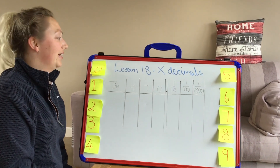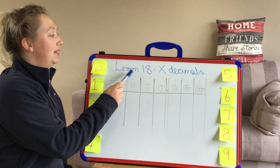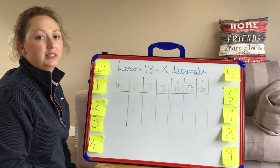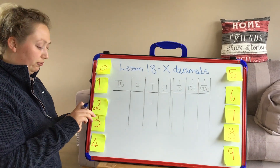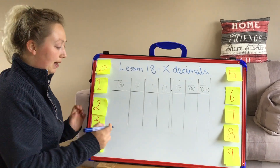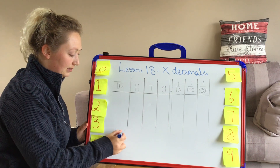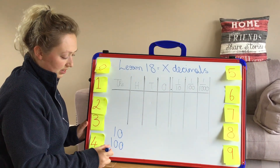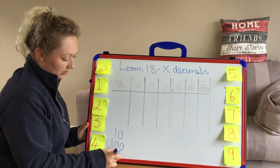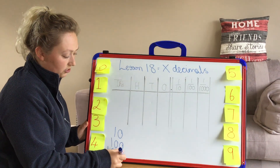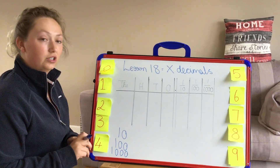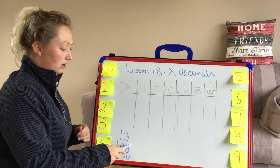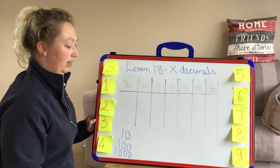Hi boys and girls, hope you're all okay. So today we're looking at multiplying decimals and we're only going to be focusing on the powers of 10. Just to remind us that the powers of 10 are 10, 100, 1000, and then you could have 10,000, 100,000, and then a million. But we're only looking at these three.